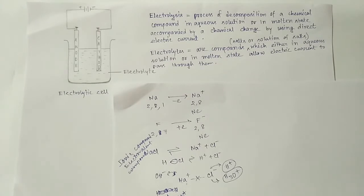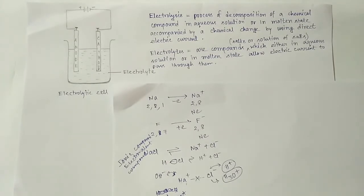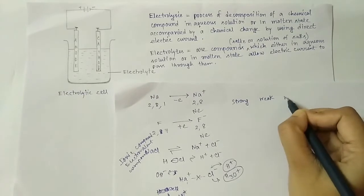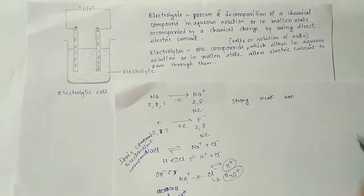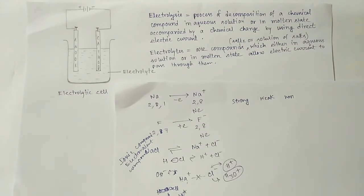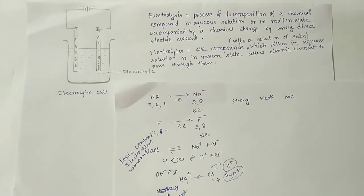Compounds like NaCl that participate in electrolysis are called electrolytes. Electrolytes are compounds, salts, or solutions of salts which, either in aqueous solution or in molten state, allow electric current to pass through them. There are three kinds of electrolytes: strong electrolyte, weak electrolyte, and non-electrolyte. Strong electrolytes completely dissociate in aqueous solution - for example, NaCl - and allow a large amount of electricity to flow. Weak electrolytes, like NH4OH, only partially dissociate in water.